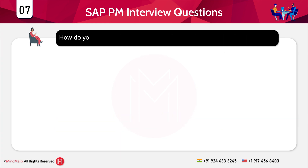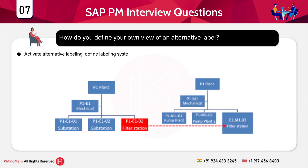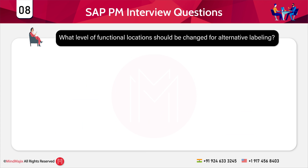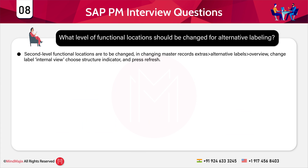How do you define your own view of an alternative label? First, activate alternative labeling, then define labeling systems for functional locations, and then enter the label internal view. The next question is: what level of functional locations should be changed for alternative labeling? The answer is second level functional locations, changed via master records > Extras > Alternative Labels > Overview, then change the label internal view, choose the structure indicator, and press refresh.